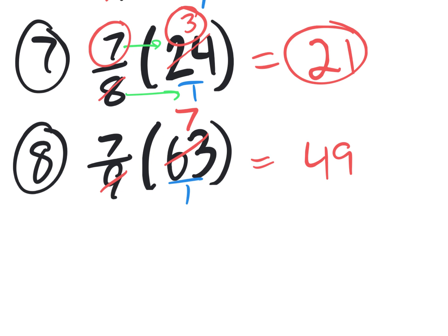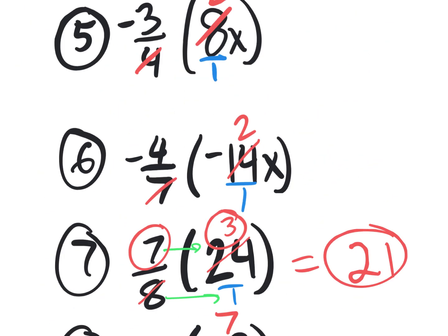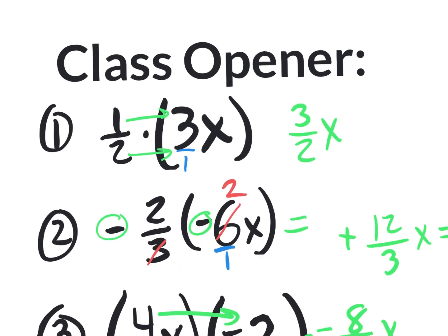That's not always going to happen where you get nice clean answers. Sometimes you get a fraction as an answer where you weren't able to cancel or reduce at the end — it's just top with top, bottom with bottom, and you get a fraction as your answer. Anyway, I think this class opener is going to build the skills to make distributive property with fractions a lot easier. Let's check it out.